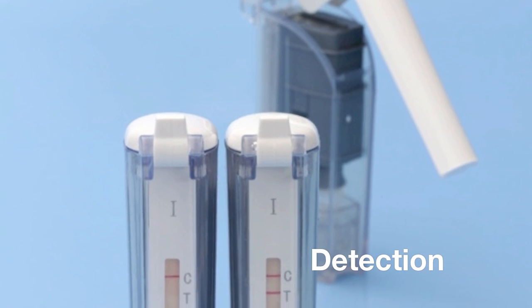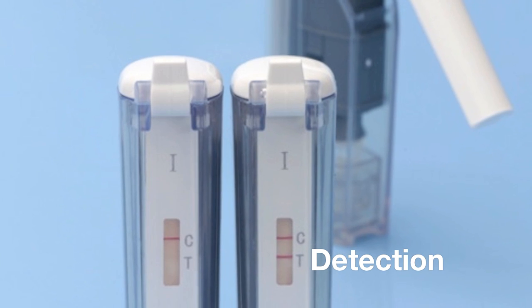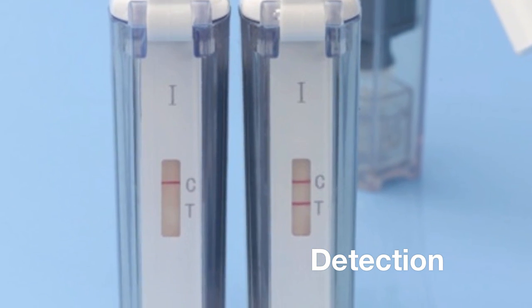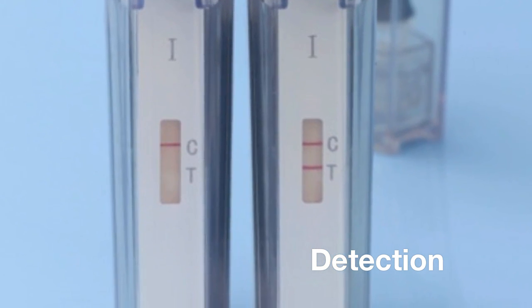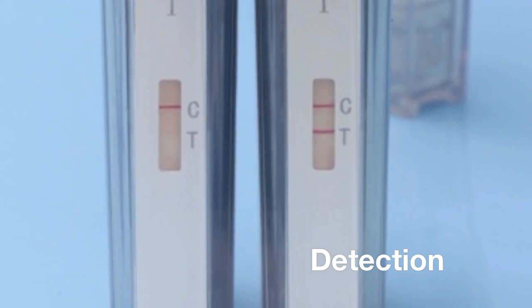After a one-hour incubation, a lateral flow strip embedded in a self-contained disposable cassette which prevents contamination allows colorimetric detection of the HSV target.